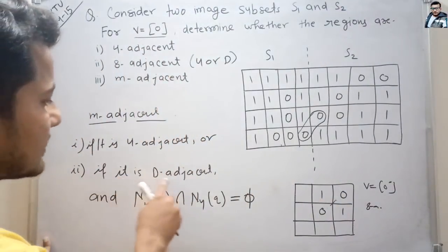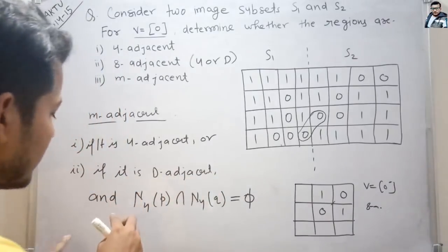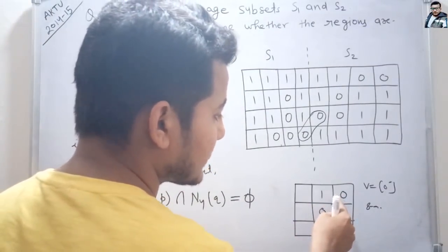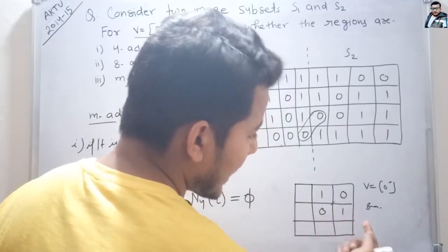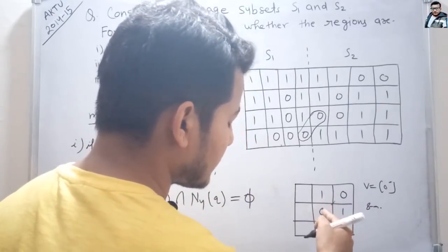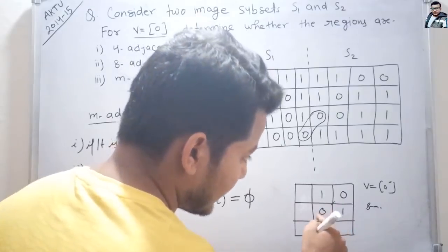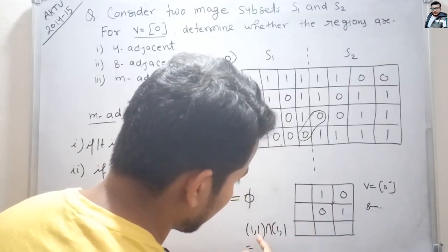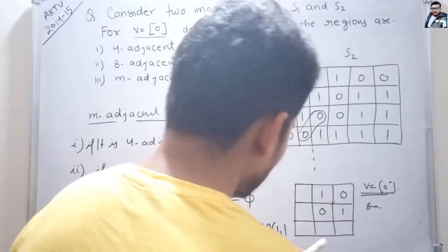To find M-adjacency: this pixel is not 4-adjacent to the other, so we check if it is diagonally adjacent — yes, this pixel lies diagonally to this pixel. Then we must find whether the intersection of the 4-adjacent neighbors of both pixels is empty. The 4-adjacent of this pixel includes 1 and 1, and the 4-adjacent of this pixel also includes 1 and 1, so the intersection is not empty — it contains the element 1.